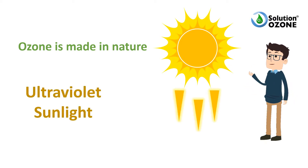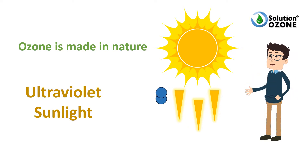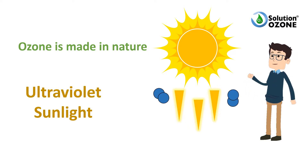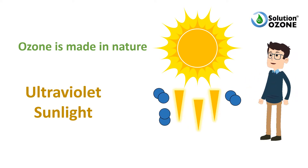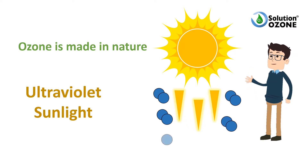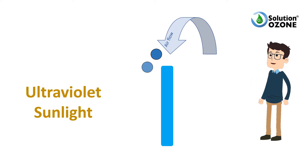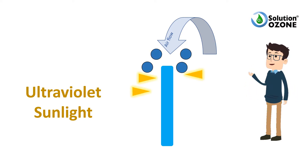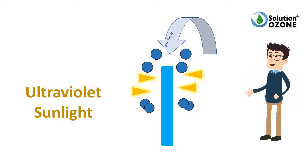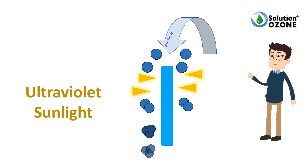Ozone is also produced naturally through ultraviolet radiation in a two-step reactive process. In the first step, solar ultraviolet radiation breaks apart an oxygen molecule to form two separate oxygen atoms. In the second step, each atom undergoes a binding collision with another oxygen molecule to form an ozone molecule. In the overall process, three oxygen molecules plus sunlight react to form two ozone molecules.